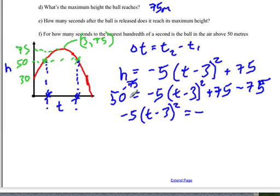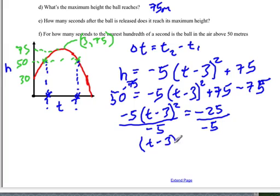Divide both sides by negative 5, which is the next step, division or multiplication. This simplifies to be (T minus 3)² is equal to, and negative 25 over negative 5 is positive 5.